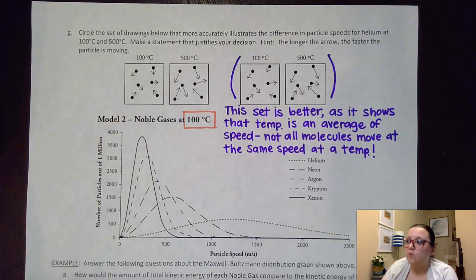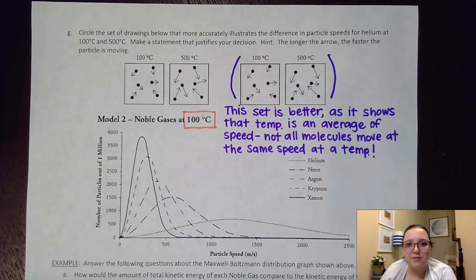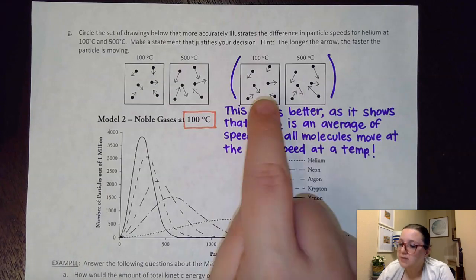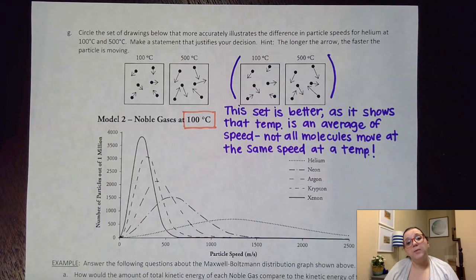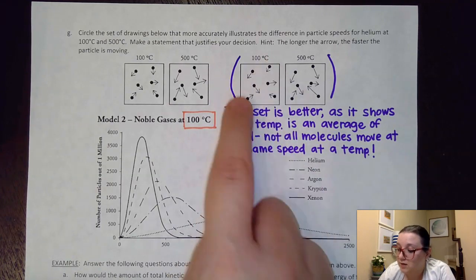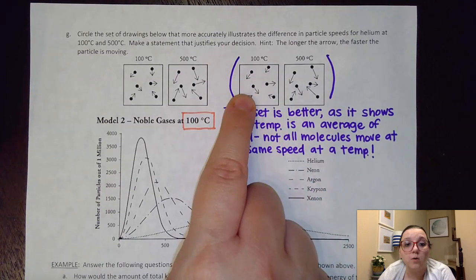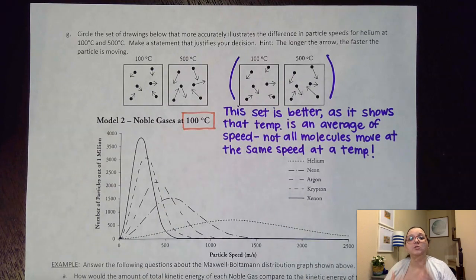Which we know from our discussion just a moment ago that that's not the case. At a particular temperature we see a range of speeds. Some are moving slow, some are moving fast, but the particular average of it tells us where that temperature is at. So this second picture is a lot better because what it's trying to show here is that we are getting an average of various different speeds.